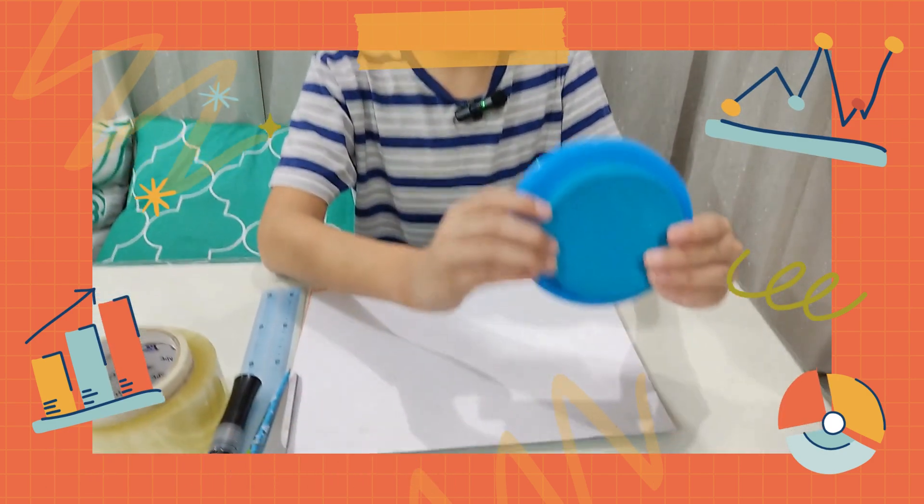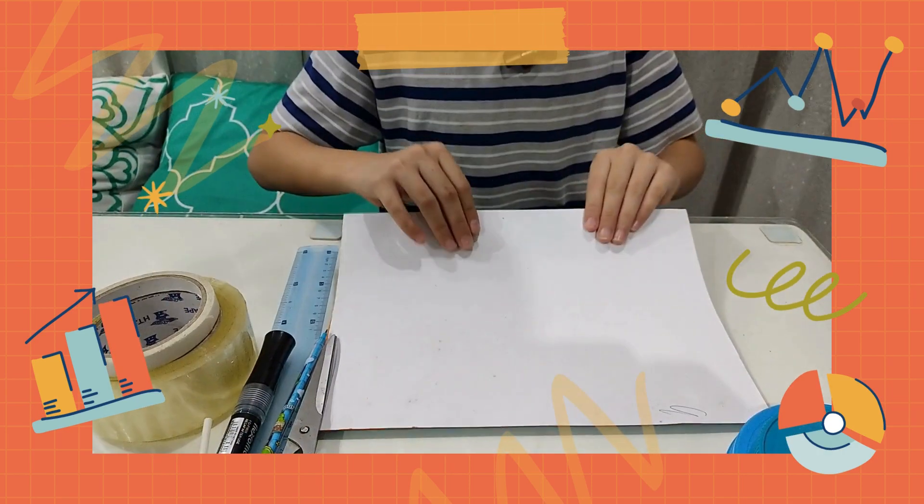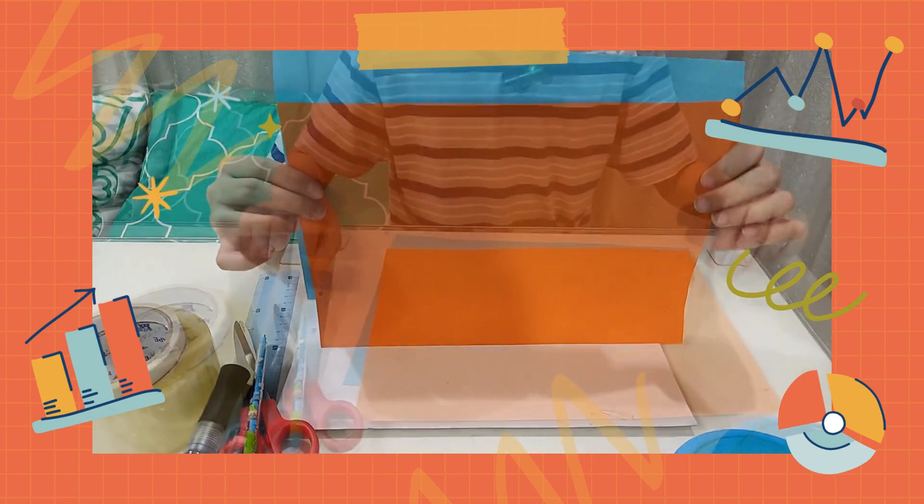You need two circle templates, one is bigger than the other, cardboard, and two different colored sheets of paper.